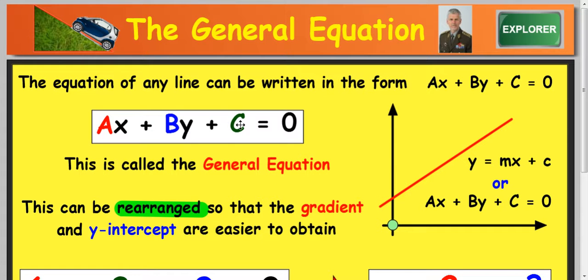So instead of having your equation as y equals mx plus c, everything is taken over to the left hand side and you put equals zero at the end.